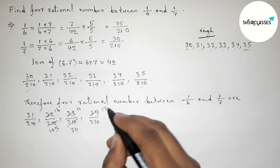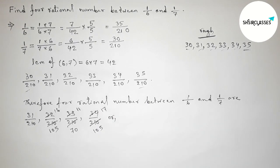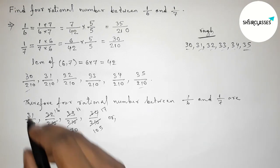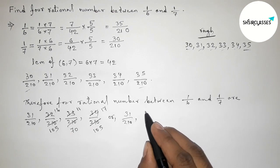And now dividing both numbers by 2, so 17 by 105. So again write down here 31 by 210, then 16 by 105, then 11 by 70, and 17 by 105.